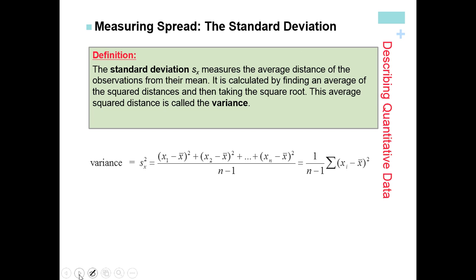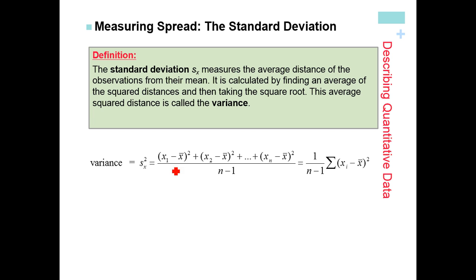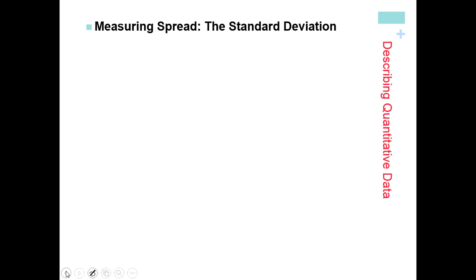This is the formula for variance — it's on your formula sheet. It looks complex, but it's just: subtract the mean from each value, square it, add them all up, divide by n − 1. Remember, that result is the variance. You square root it to get standard deviation.